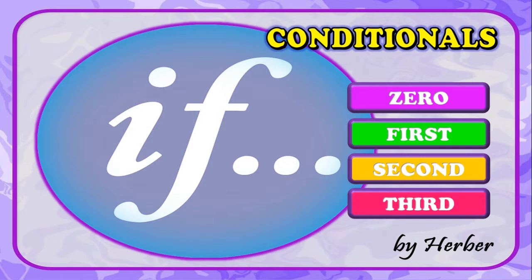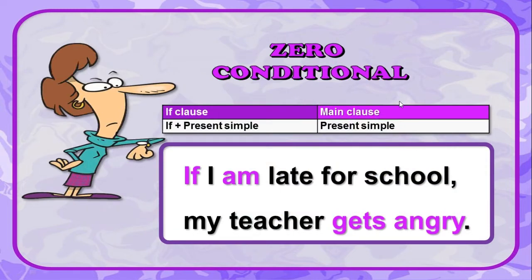Conditionals. Zero conditional: the formula is 'if clause' — if plus present simple — and the main clause is present simple. For example: if I am late for school, my teacher gets angry.